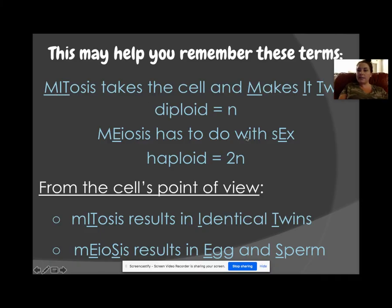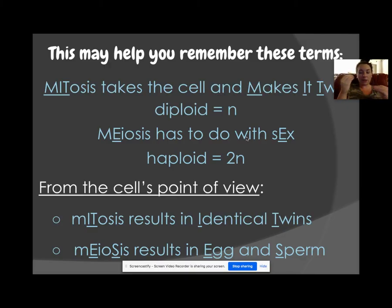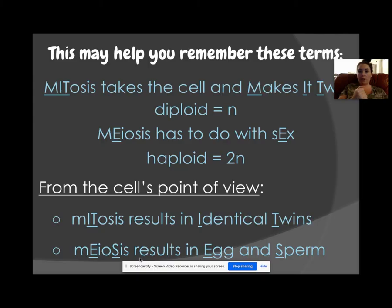Meiosis has an E in it — and that E connects to sex cells: sperm, egg, and sex. So meiosis = sex cells. Another way: mitosis has IT for 'identical twins' — exact copies. Meiosis has E and S for 'egg and sperm.' Mitosis covers all body cells and asexual reproduction; meiosis covers sexual reproduction and creates only sex cells.